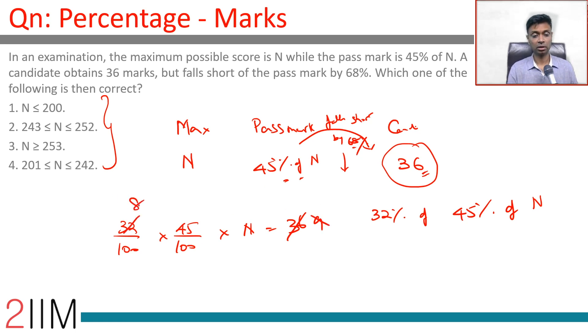This is 9, 8, 45, 5. 8 into 5 is 40 which is 2 by 5. 2 by 100 is 50. 50 into 5 is 250.